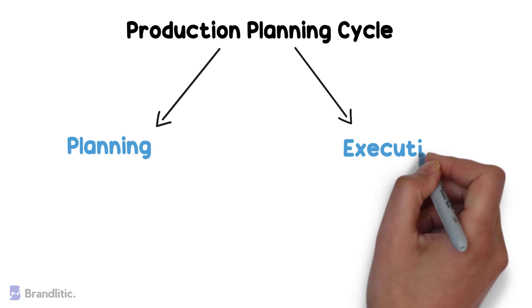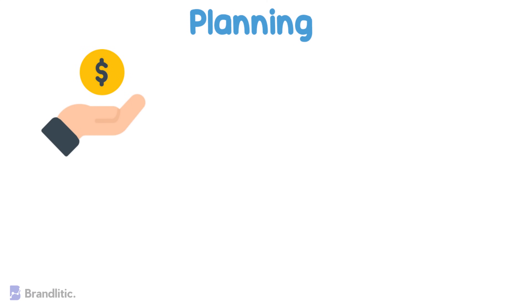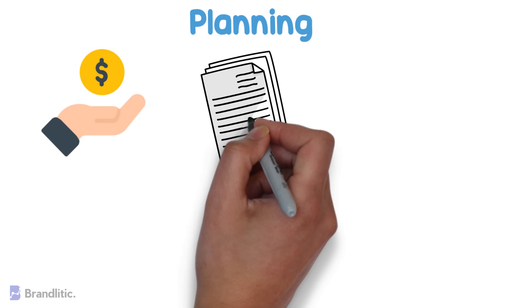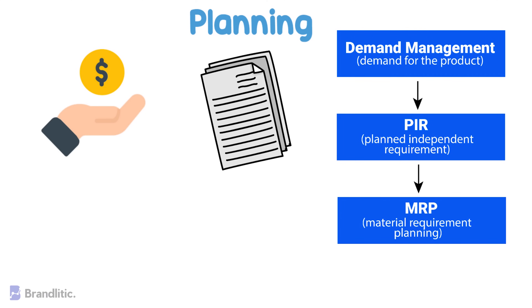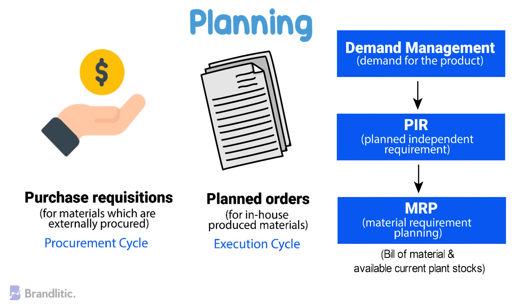Let's have a look at the production planning cycle. The production planning and control consists of two processes: planning and execution. Planning is generally done from a budgeted sales plan to meet the sales requirement as per production cycle times, and demand for the product is entered through demand management in the form of planned independent requirements. This data from demand management becomes the input to material requirement planning. The MRP checks for the availability of various raw materials using master data such as BOM and available current planned stock. In the case of material shortage, purchase requisitions are created for externally procured materials and planned orders are created for in-house produced materials. The purchase requisitions and planned orders initiate the procurement cycle and the execution cycle of production, respectively. Since MRP works with infinite capacities, capacity leveling must be done in order to avoid any capacity bottlenecks.